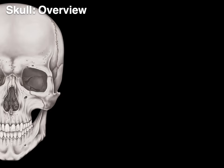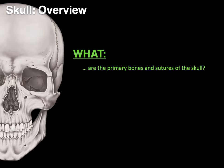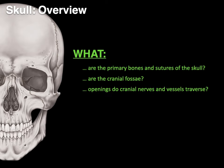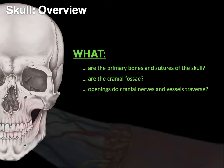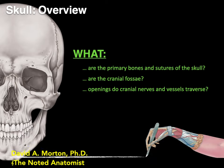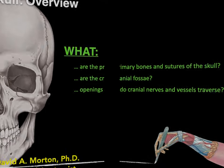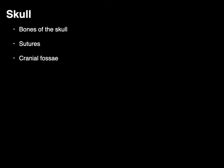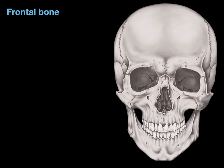I'm going to do an overview of the skull and answer the questions: what are the primary bones and sutures of the skull, what are the cranial fossae, and what openings do cranial nerves and vessels traverse? Hello everyone, my name is Dr. Morton and I'm the noted anatomist. I'm going to cover the bones of the skull, the sutures, and the cranial fossae, starting with the bones of the skull.